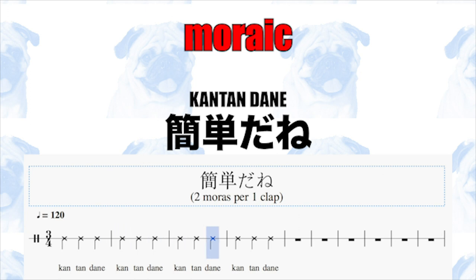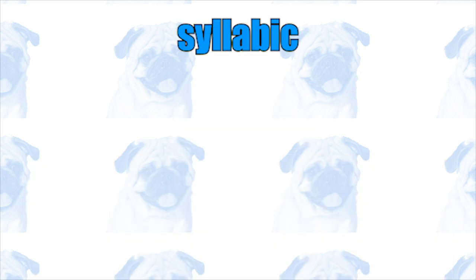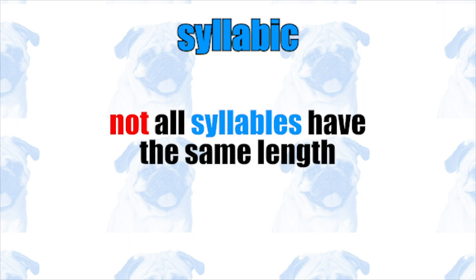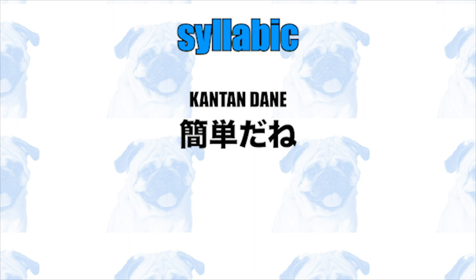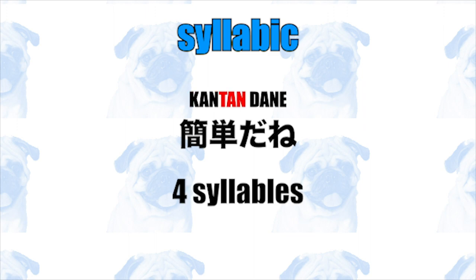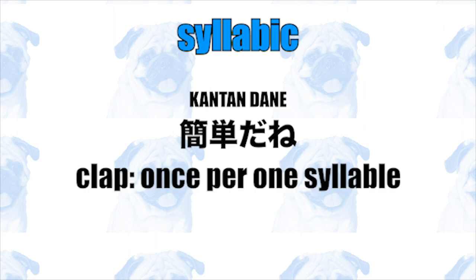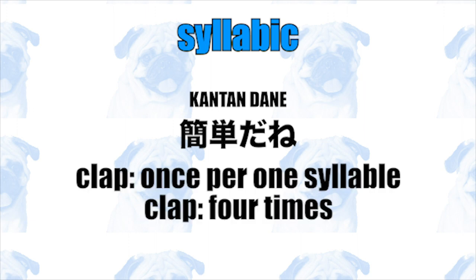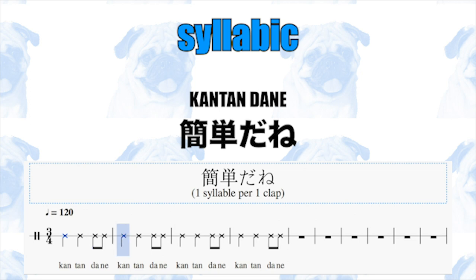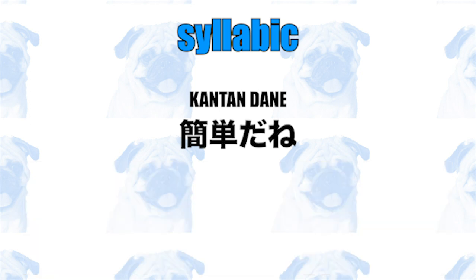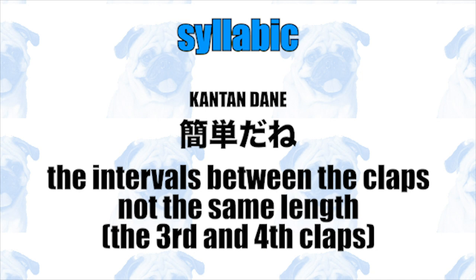On the other hand, in the syllabic system, the length of one syllable may not be the same as that of another syllable. For example, the sentence from above contains four syllables: "kan tanda ne". If you clap once per one syllable, then you have to clap four times in total. However, notice that the intervals between the claps are not of equal length, and in fact, the last two claps are sped up.